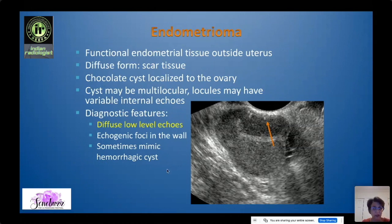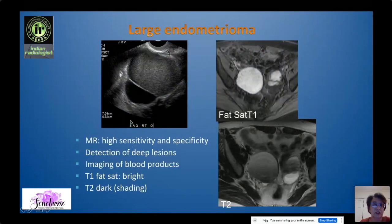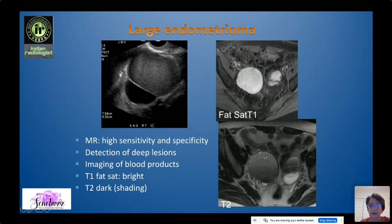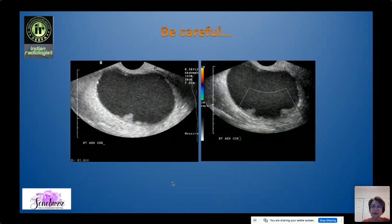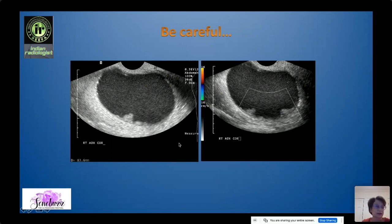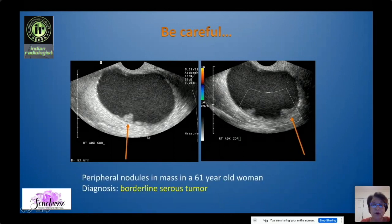For a large endometrioma over seven centimeters, you may want to perform MR to confirm — on MRI they show high signal intensity on T1 due to blood content, with characteristic T2 shading due to hemosiderin. Be careful, however: a lesion may also show diffuse low-level echoes but contain soft tissue nodules, which would exclude endometrioma. One such case with nodules turned out to be a borderline serous tumor.